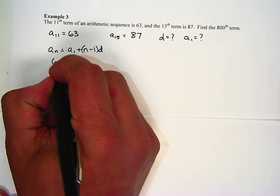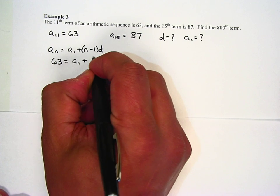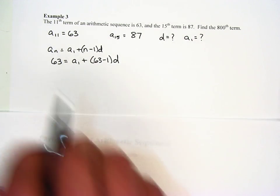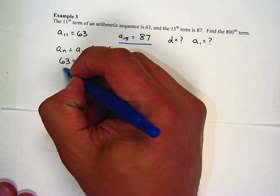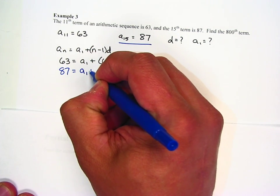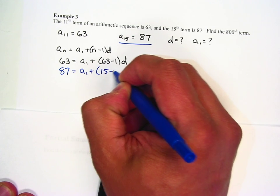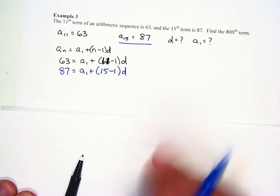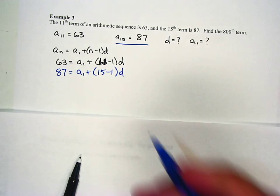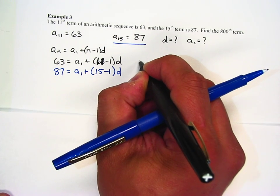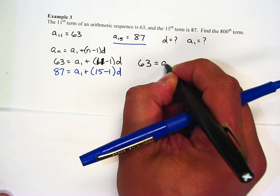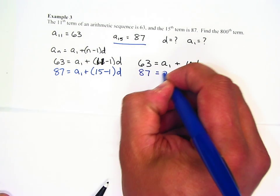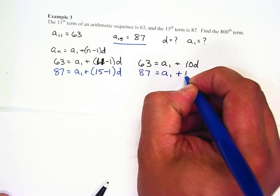Here, I have 63 equals a sub 1 plus 10d. And then for this other one, a sub 15 right here, I know 87 equals a sub 1 plus 15 minus 1. I made a mistake. This is actually 11. And then that's d. So now when I go and simplify this, the top equation becomes 63 equals a sub 1 plus 10d. The bottom equation becomes 87 equals a sub 1 plus 14d.